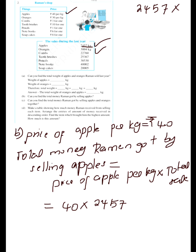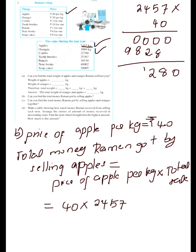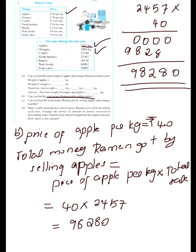Computing 2457 multiplied by 40: 0, 0, 0, 0; 28 carry 2; 22 carry 2; 18 carry 1; 9 — giving digits 9, 8, 2, 8, 0. Since the question asks for total money, the answer is in rupees: 98,280 rupees.